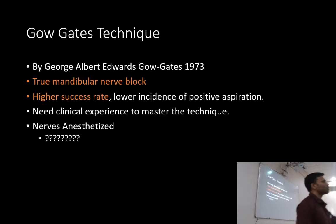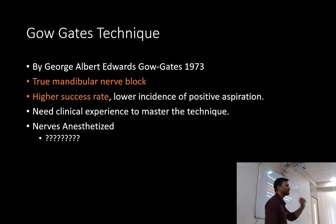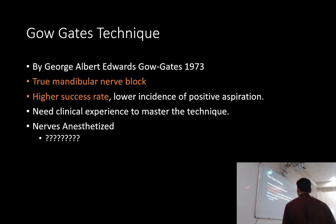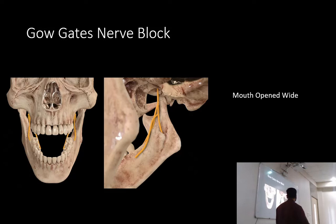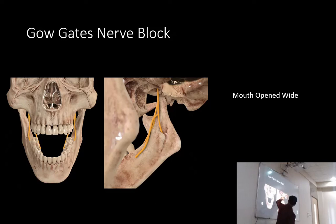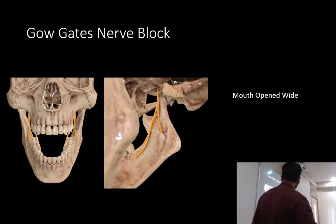It has a very high success rate — once you master the technique, you won't need any other block. The difficulty is that it requires a lot of experience to master. The nerves anesthetized include the lingual nerve, buccal nerve, mylohyoid, inferior alveolar, and in majority of cases around 75%, the buccal nerve is also anesthetized because sometimes it branches out at a higher level.